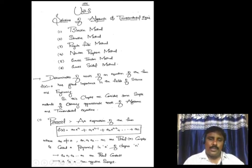Before going through these methods, we are going to see some introduction. First: determination of roots of an equation, which is in the form f(x) = 0. This has great importance in science and engineering. In this chapter we consider some simple methods to find the roots of an equation.